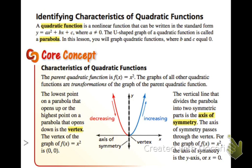Our core concept is mainly to start looking at the characteristics of the quadratic function. So the parent function is f of x is equal to x squared. The graphs of all other quadratic functions are transformations of the graph of the parent quadratic function. So by transformations, we are thinking in the coordinate plane, we have translations, possibly rotations, reflections, and even dilations.